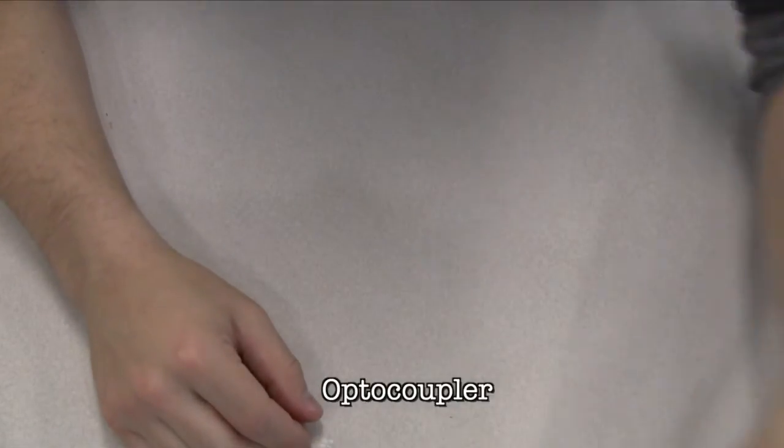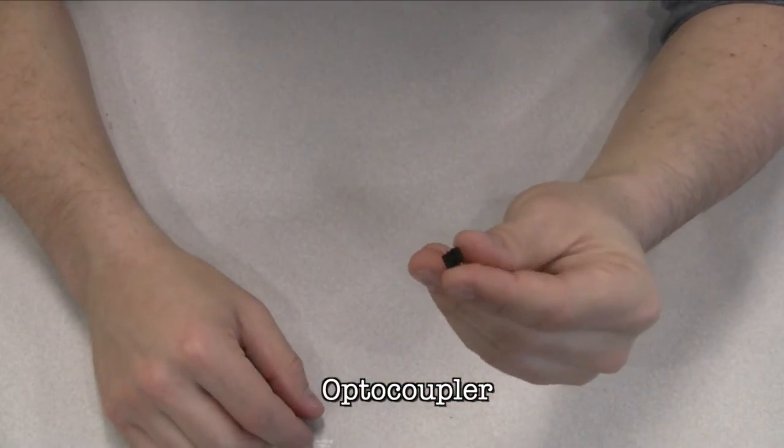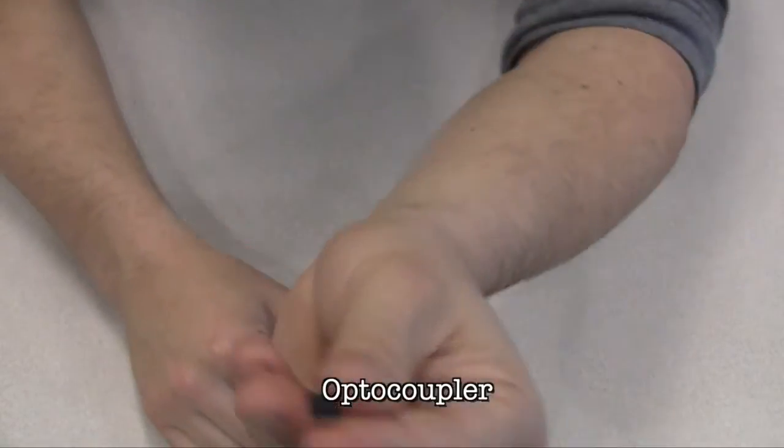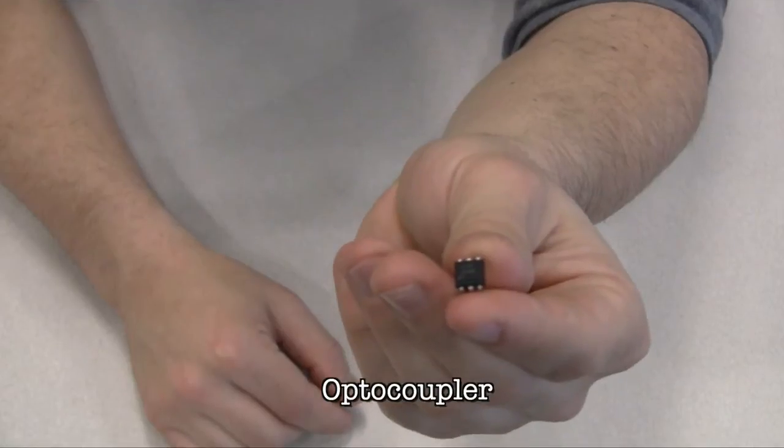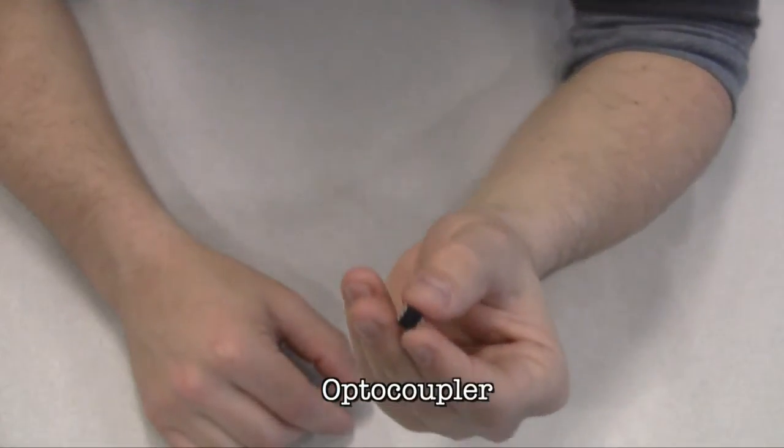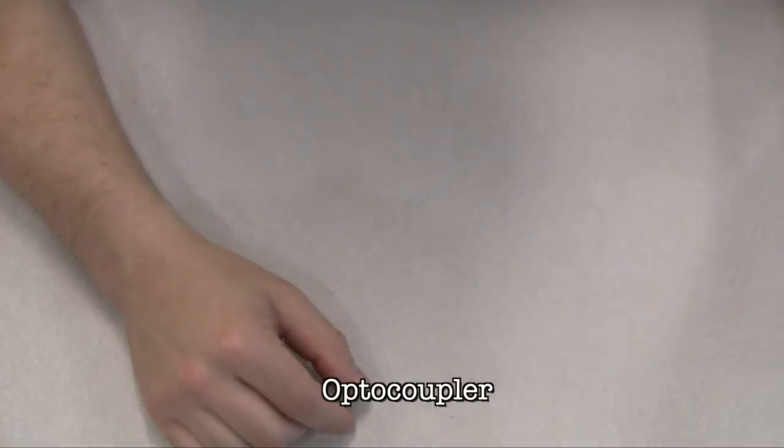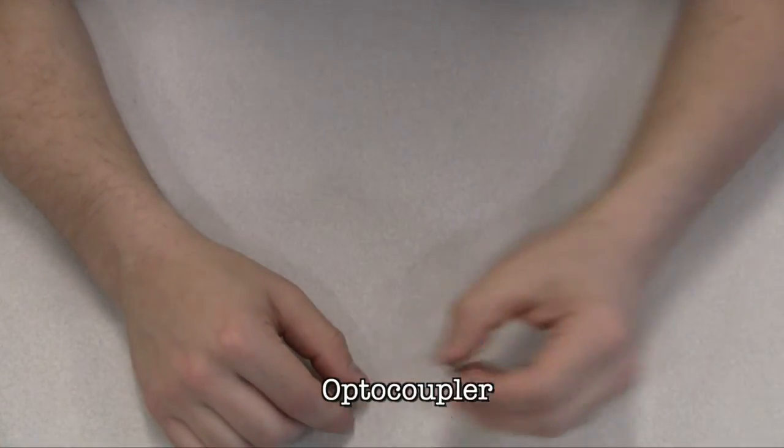An optocoupler allows you to connect two circuits that do not share a common power supply. Internally, there is a small LED that, when illuminated, causes a photoreceptor inside to close an internal switch. When you apply voltage to the positive pin, the LED lights and the internal switch closes. The two outputs replace a switch in the second circuit.